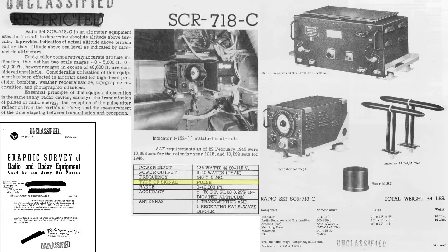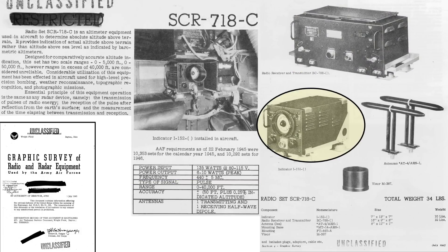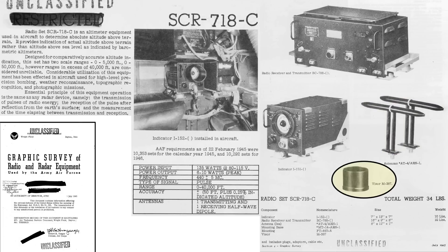The system operates at 440 megacycles as a pulse signal. The system consists of a radio receiver-transmitter, I-52 indicator, antennas, and a visor hood. The system's total weight is 34 pounds.